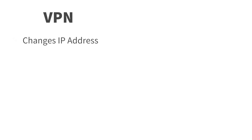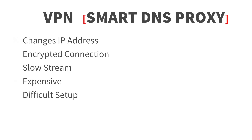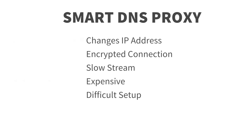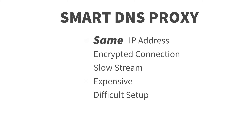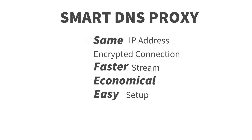If you're using a VPN, it changes your IP address and pushes all traffic through an encrypted tunnel, which makes your video streaming a lot slower. Not to forget, VPNs are a bit expensive and rather hard to set up on routers and media streaming devices like PS4 and Apple TV. Smart DNS, on the other hand, doesn't change your IP address or encrypt your traffic, which means your video streaming will be a lot faster and it's cheaper to set up on every device, including routers and media streaming devices.